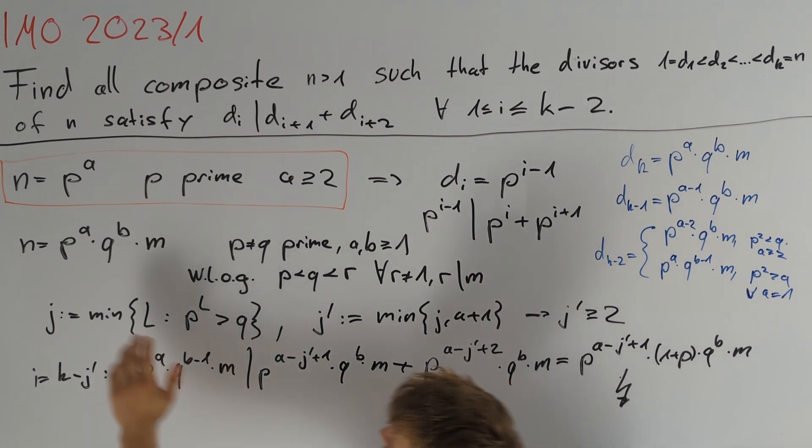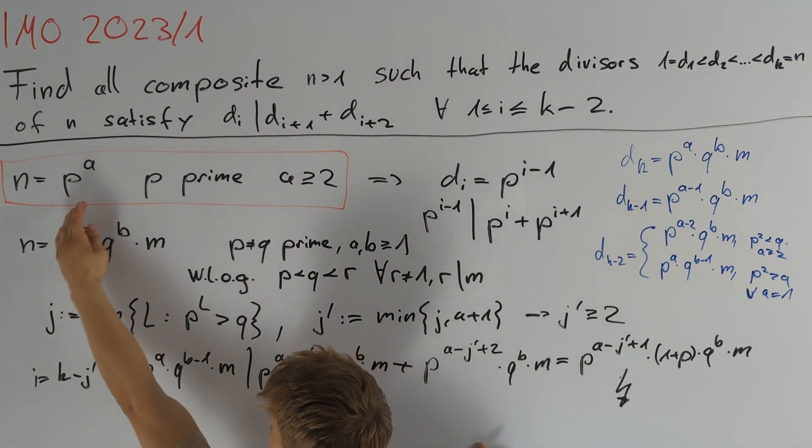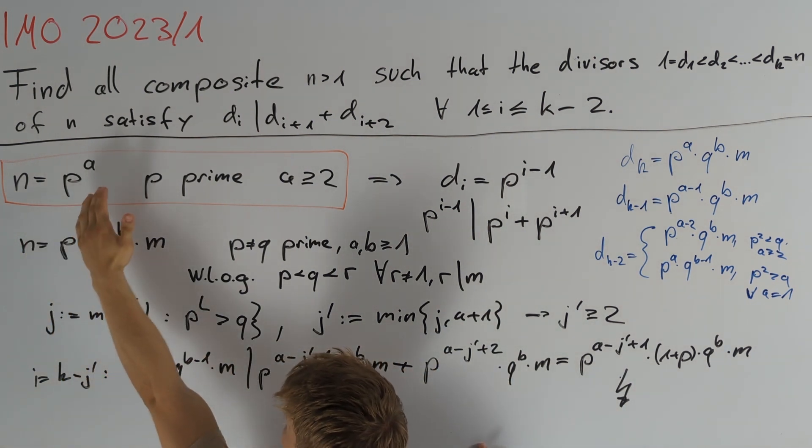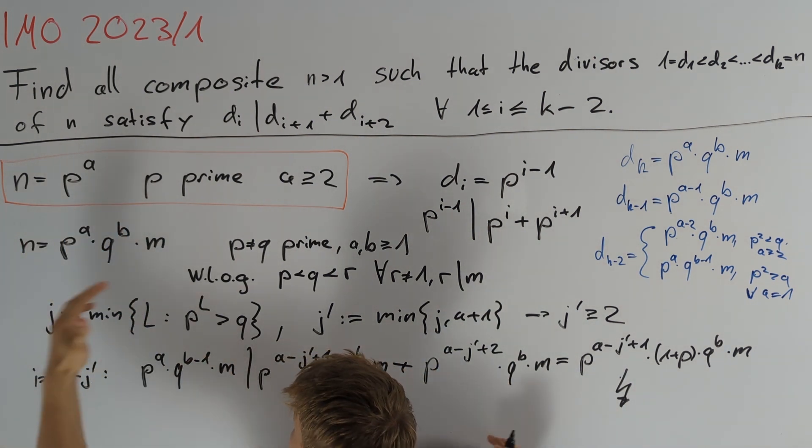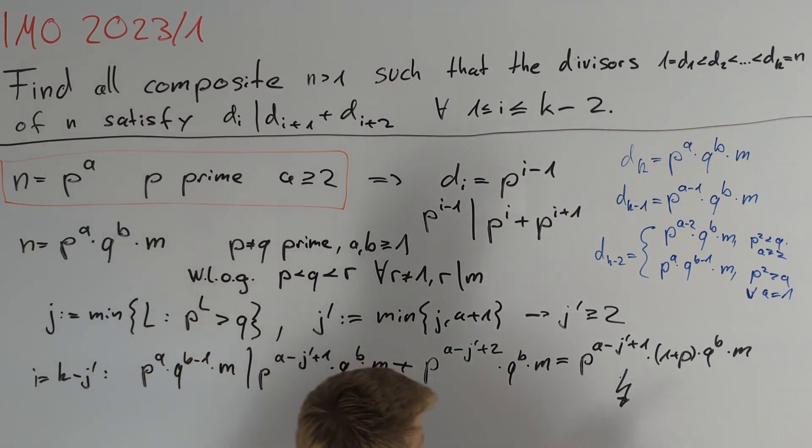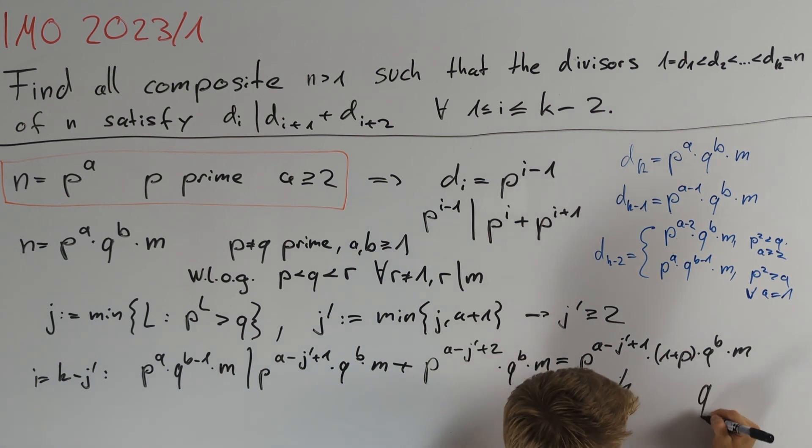In total, we know that n equals p to the power of a is our only possible solution, and therefore we are done.